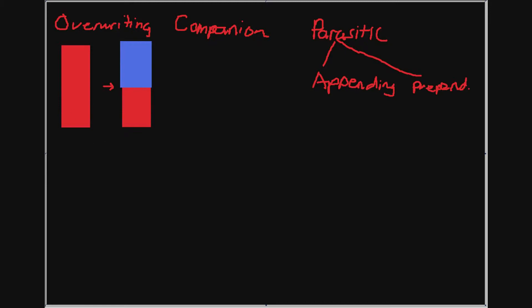These viruses are really dangerous because the host loses its data. This is also why virus writers would stay away from overriding viruses — it's very conspicuous. Users would immediately notice that their host program is not running. It's only the virus that has control, and the virus exits out of itself without transferring control back to the host.